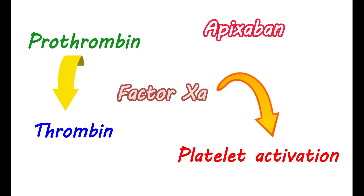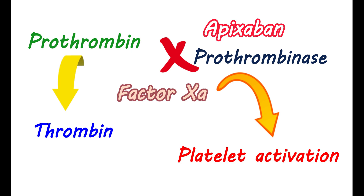Apixaban does not require any cofactor like antithrombin-3 to inhibit factor Xa. It selectively and reversibly blocks the active site of this factor. It can inhibit both free and bound factor Xa, and also inhibits the prothrombinase activity. Even though it does not produce any direct effect on platelet aggregation, it can still indirectly inhibit platelet aggregation induced by thrombin, thereby decreasing thrombin generation and thrombus formation.